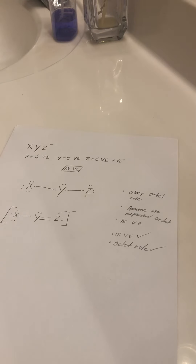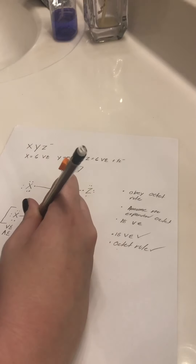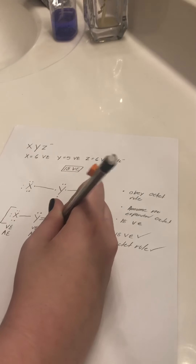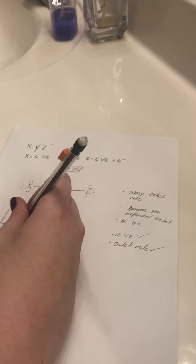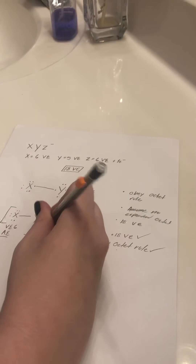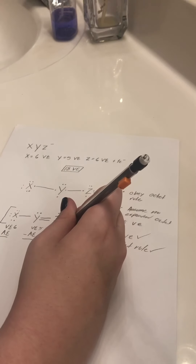Now we have to find the associate electrons — those are the electrons that are touching the element or atom. Then we subtract them from the valence electrons to get the formal charge. The valence electrons we started with are 6 for X, 5 for Y, and 6 for Z.